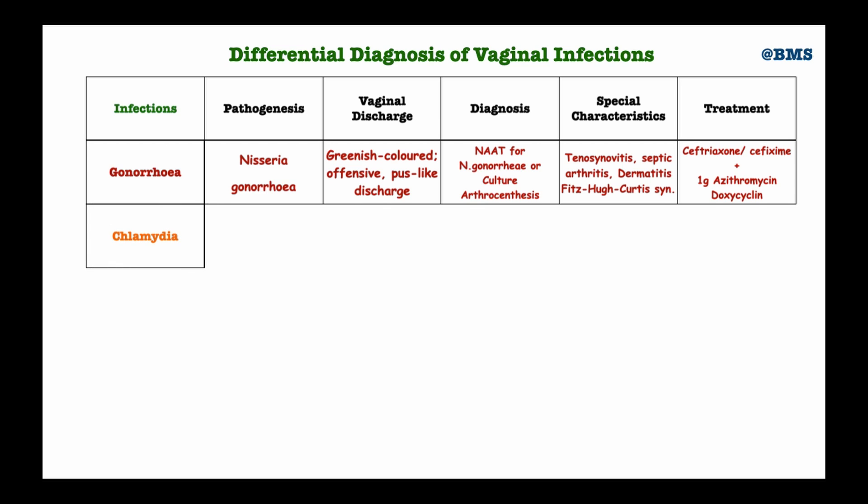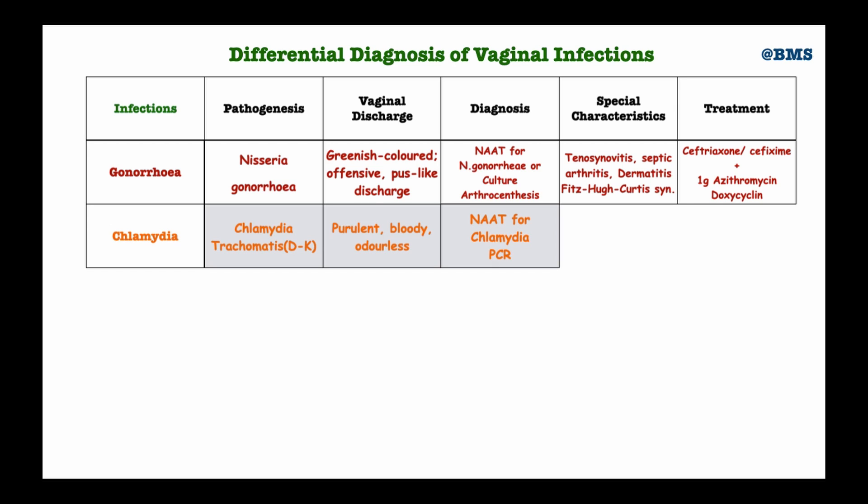Moving to chlamydia, the causative organism is Chlamydia trachomatis, specifically the D-K serotype. The discharge from chlamydia infection is usually purulent, bloody, and odorless. Diagnosis is primarily by Nucleic Acid Amplification Test specific for chlamydia, and we also perform the Polymerase Chain Reaction (PCR). The NAAT is the gold standard for the diagnosis of chlamydia.